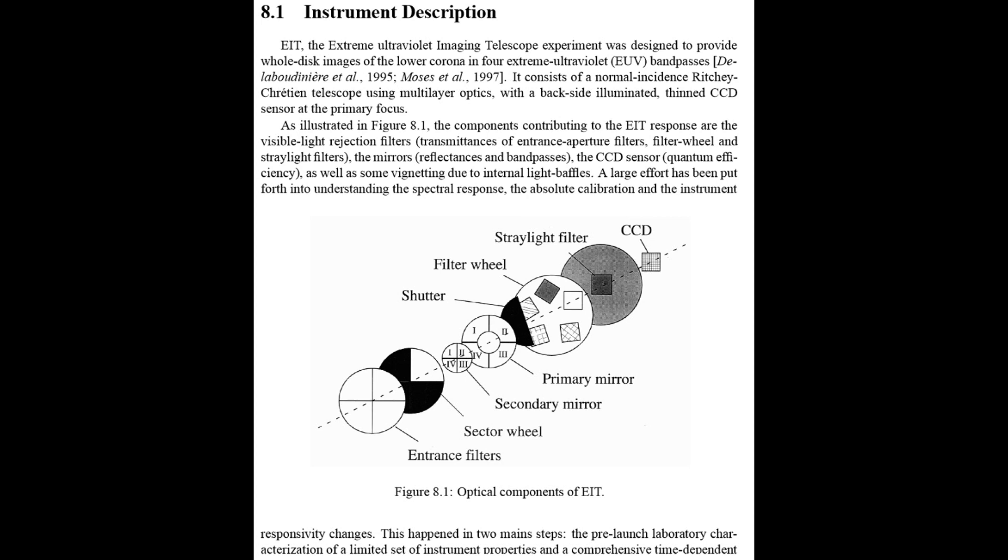The solution to the problem was simply to rotate the filter wheel so that one of these spare filters would block the light path and prevent stray light from reaching the CCD. It would be blocked before it would reach the damaged stray light filter.